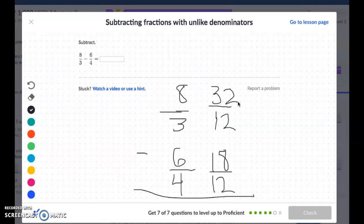And then now that I have common denominators, I can do my subtraction. 32 take away 18 would be 14, and my denominator of 12 stays the same.